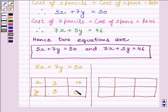Now, we will take the other equation that is 7X plus 5Y is equal to Rs. 46 and find the two solutions for it, which are 3, 5 and -2, 12.